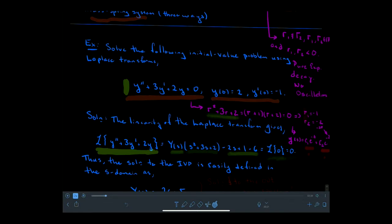After we perform those transforms using the table, we'll find that Y of S — the solution to the ODE in the Laplace transformed domain, the domain of S — always multiplies our characteristic equation, the same characteristic equation we had. That is because we cannot get rid of those roots, since those roots — which we find from the characteristic equation — end up defining the rates associated with this exponential decay.